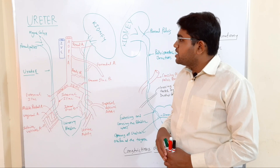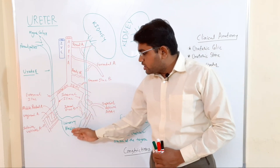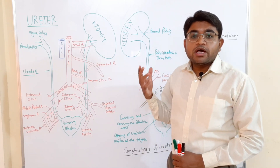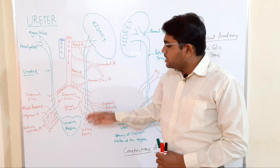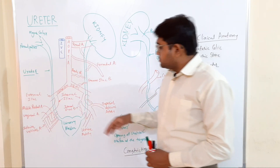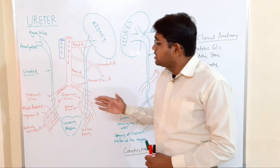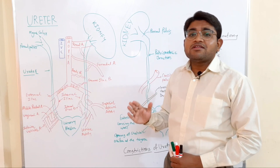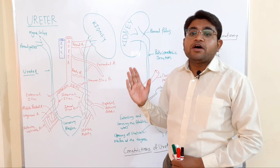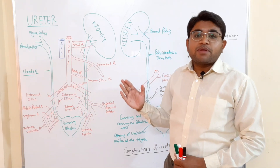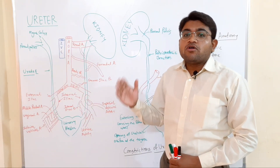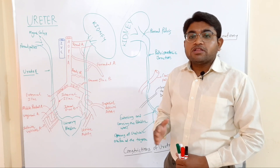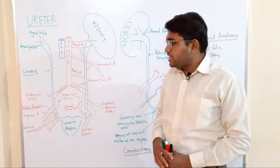The ureters convey urine from the kidney to the urinary bladder. They lie on the posterior abdominal wall — actually on the posterior side of the peritoneum. In the abdominal part, they lie on the posterior abdominal wall, and in the pelvic part they lie on the lateral pelvic wall.